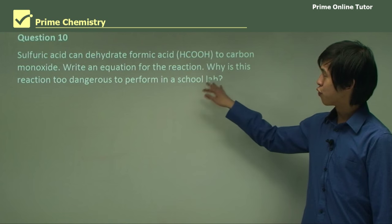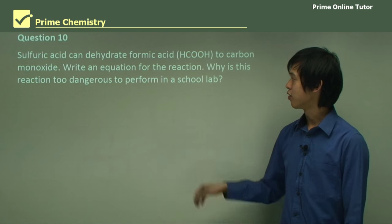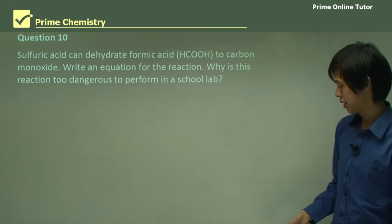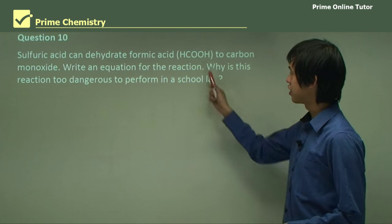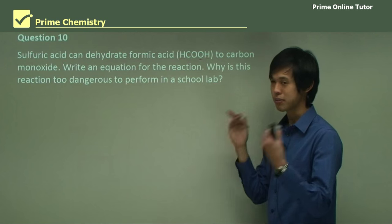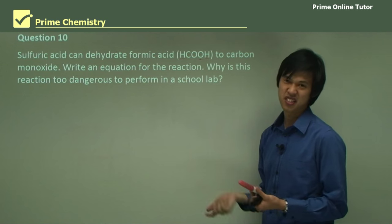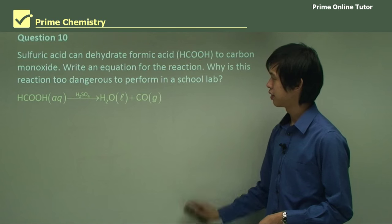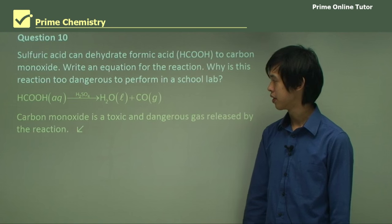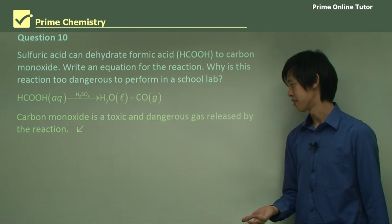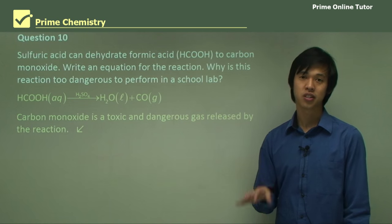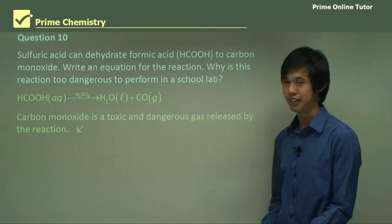Sulfuric acid can dehydrate formic acid to carbon monoxide. The equation is simple — remove the water: HCOOH → H₂O + CO. This reaction is dangerous and cannot be performed in a school lab because carbon monoxide is toxic. Even low concentrations can cause asphyxiation, which is extremely dangerous.